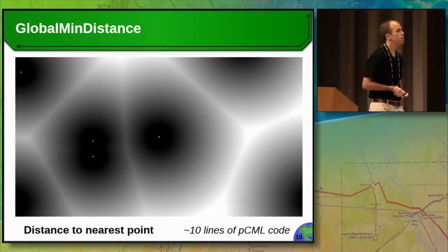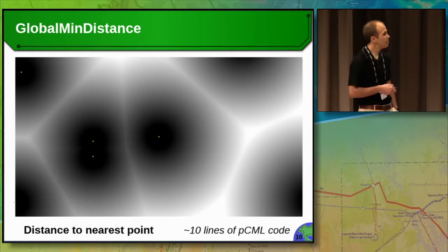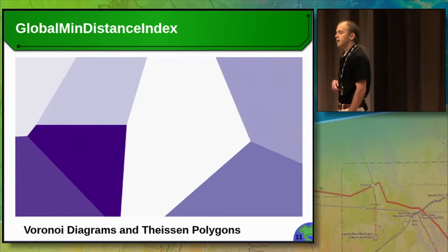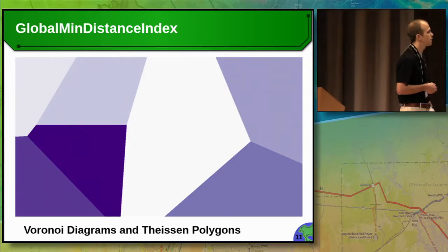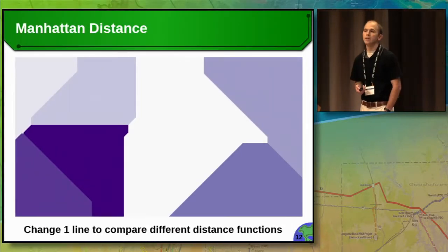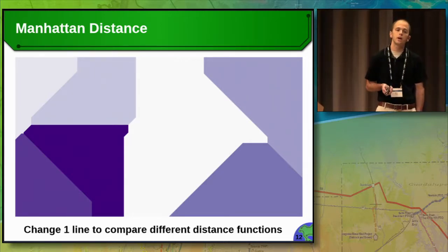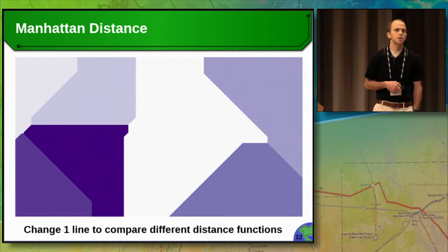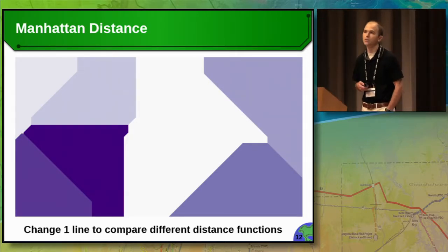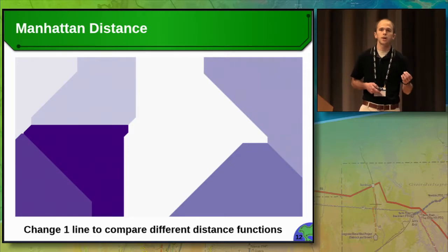For example, a researcher or student could implement global minimum distance — calculating the nearest distance to a point for every cell in a raster — in about 10 lines of PCML code. Change one line to return the index to the actual point instead of the distance and suddenly we're talking about Voronoi diagrams and Thiessen polygons. Another single line change can swap the distance function — from Euclidean to Manhattan distance — and you can see how this influences output. Students can look at operations themselves, make small modifications, and see output instantaneously. This also works for parallelization: you can change the decomposition strategy and compare performance.